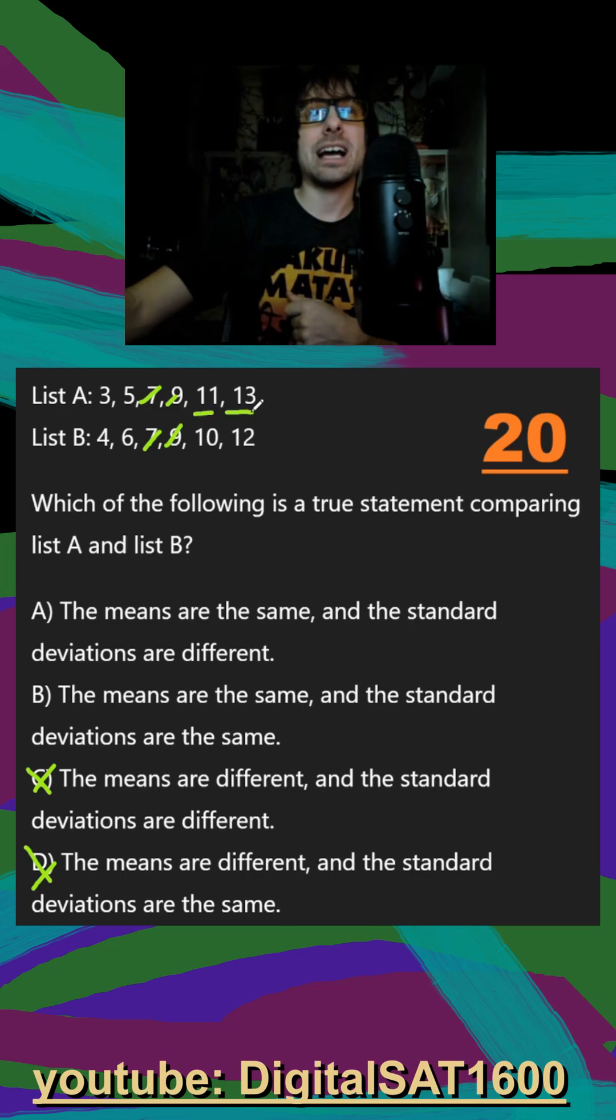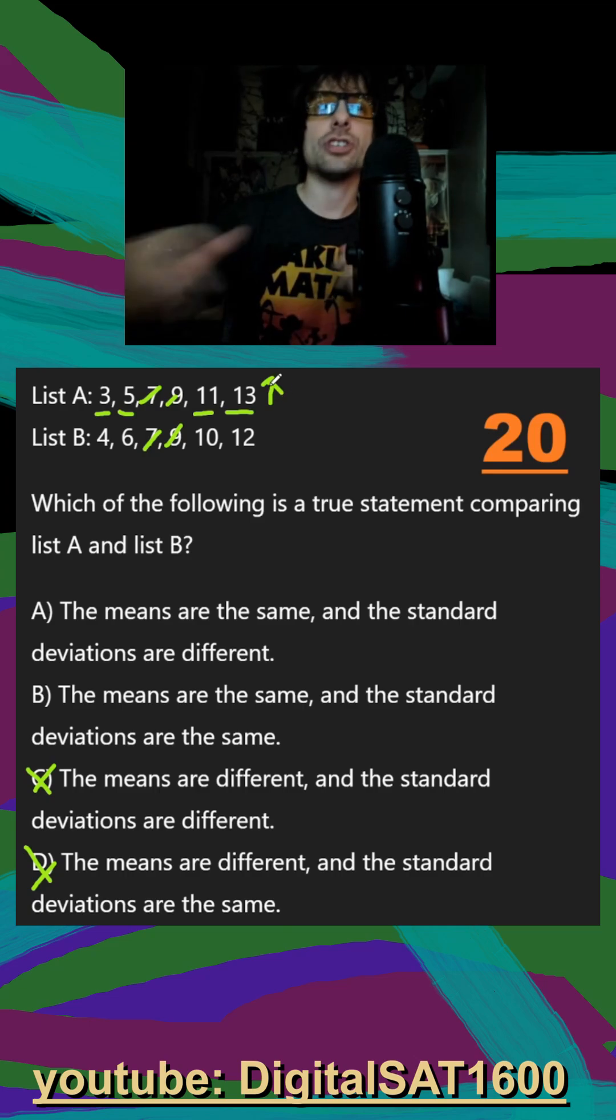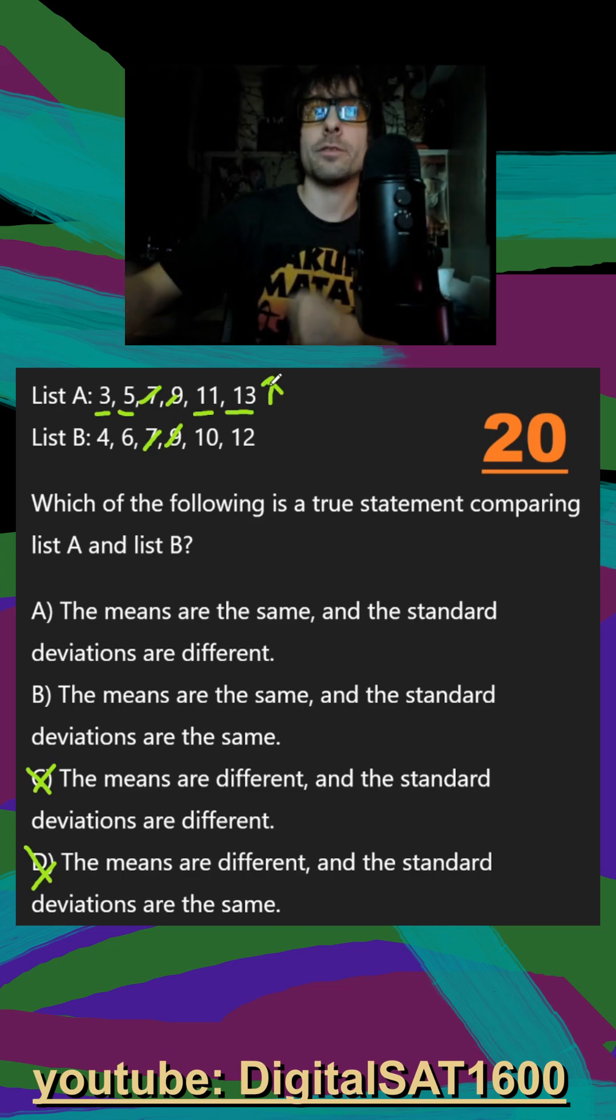This one only goes to 10 and 12. This one goes higher and higher. This one goes to 6 and 4 which is closer to 7 and 9. This one goes lower and lower. So this is going to be a higher standard deviation because I'm going further away from our center.